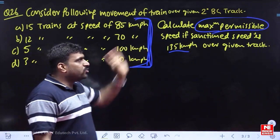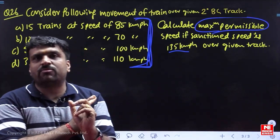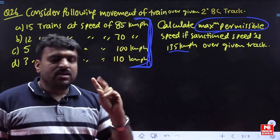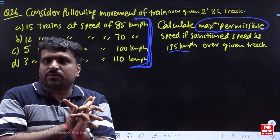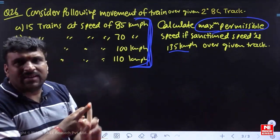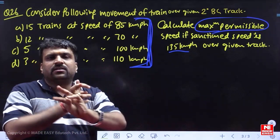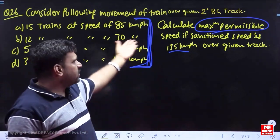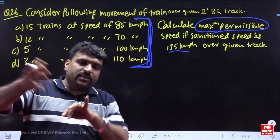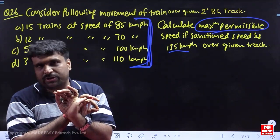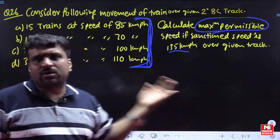You need to calculate the maximum permissible speed. First concern: what did the railway board sanction? That is 135. Second: ask super elevation — do you have super elevation? If average speed is given, means super elevation is given. Third: transition curve — if given, ask; otherwise ignore. If it is the old method, fourth criteria applies too. Otherwise one more step will be added.